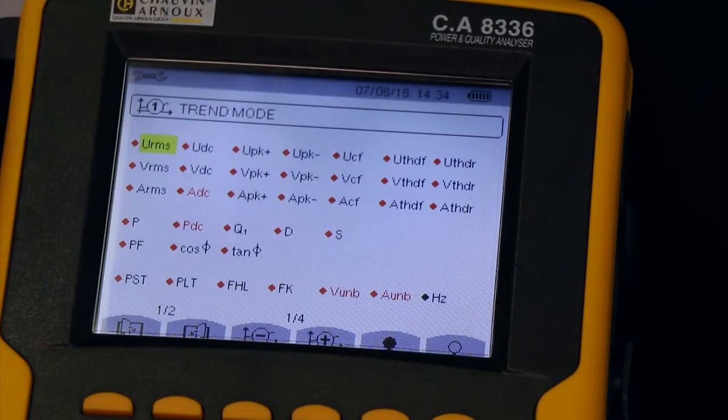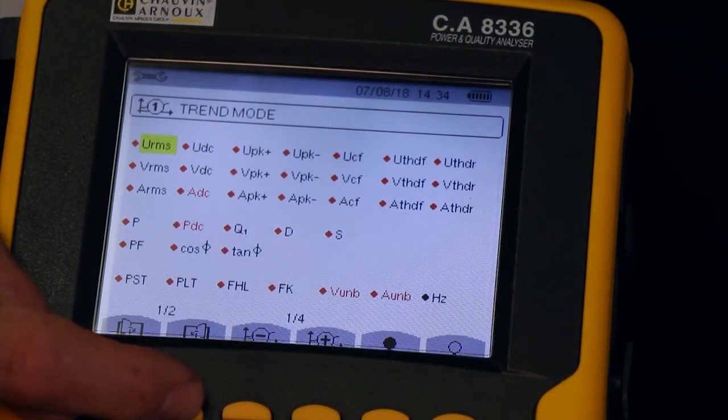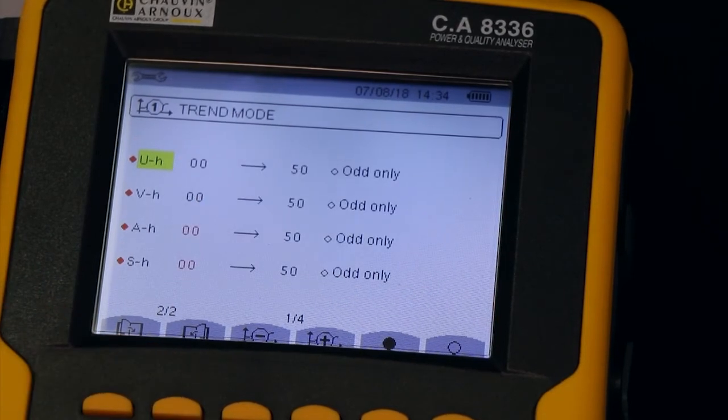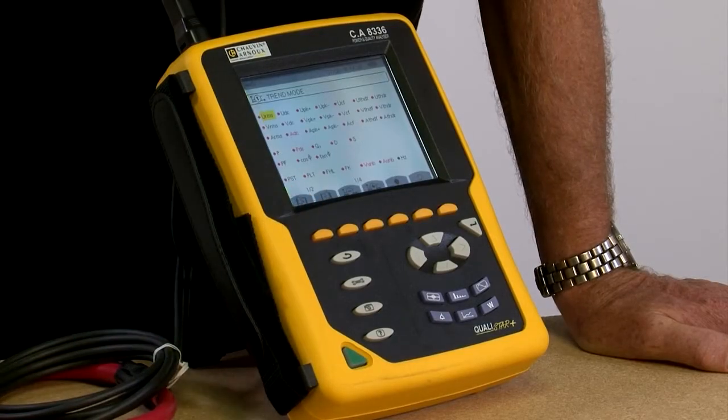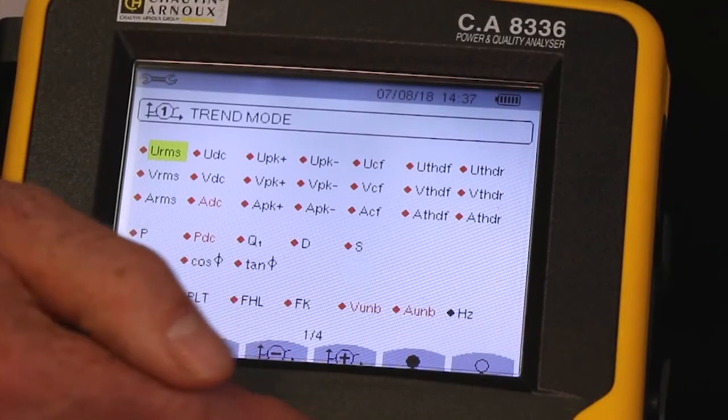And there are two pages of parameters for each trend. So this is page 1, and with the fast key, we can go to page 2, and back to page 1. There are four trend modes that can be configured to measure the parameters I want.